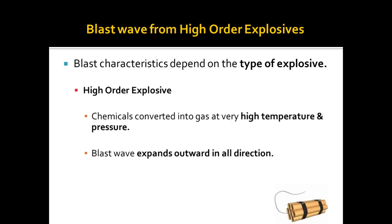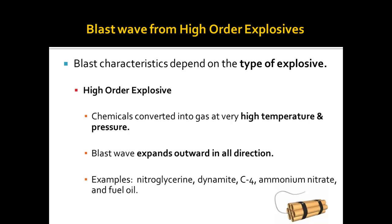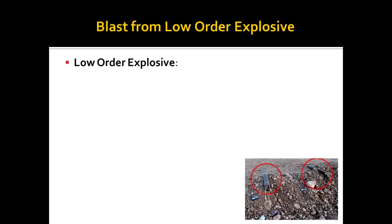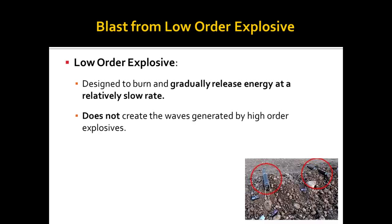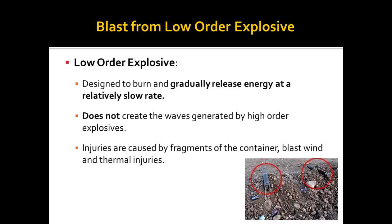Examples of high order explosives are nitroglycerin, dynamite, C4, ammonium nitrate, as well as fuel oil. Low order explosives are designed to burn and gradually release energy at a relatively slow rate. They do not create waves that are generated by high order explosives, and the injuries are caused by fragments of the container, blast wind, as well as thermal injuries.